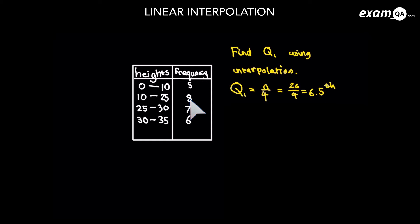It looks like it's going to be in the next interval, the 10 to 25, because there's 8 numbers in there. It's very important to remember you've already gone past 5 numbers. So if you're looking for the 6.5th number, you need to go past another 1.5 more. And that's really important — of the 8, you only want 1.5 into there, because you've already passed 5 numbers.